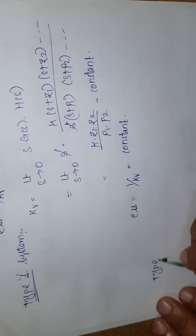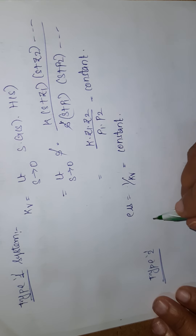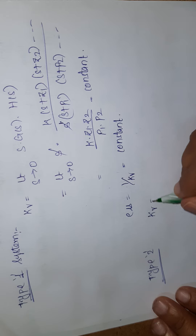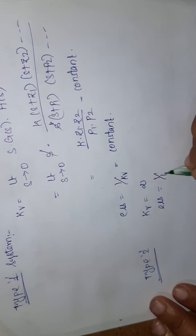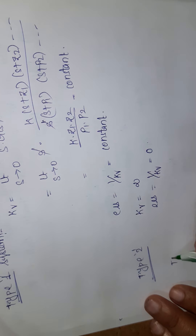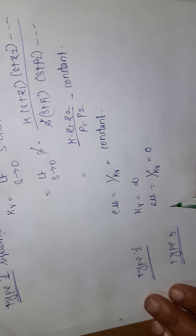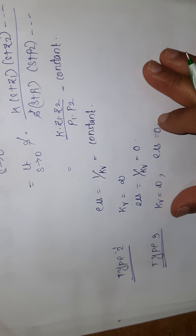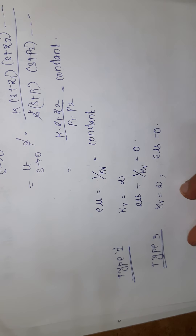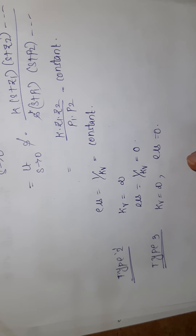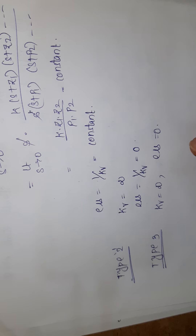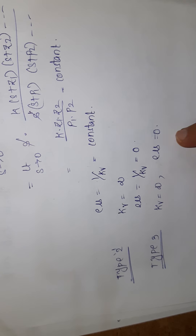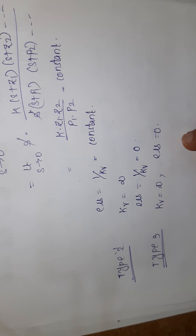For a type 2 system with ramp input, K_v = infinity and E_ss = 0. Similarly for type 3, K_v = infinity and E_ss = 0. We conclude that systems with type 2 and above, for a unit ramp signal, have K_v = infinity and steady state error = 0.